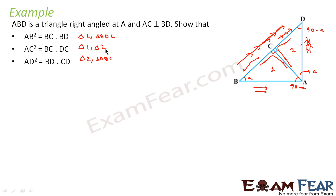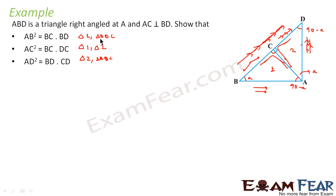What I am trying to identify is which two triangles we have to prove similar for each case. In the first case, we have to prove triangle 1 — that is BCA — is similar to triangle ABC. In the second case, we have to prove triangle 1 is similar to triangle 2. And in the third case, we have to prove triangle 2 is similar to triangle ABC. Try to find out which two triangles to make similar from the sides themselves.